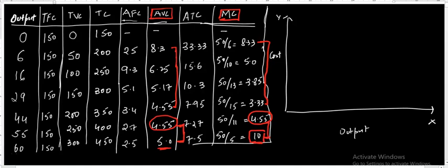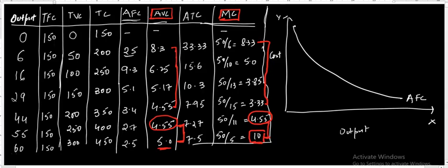If we look at the average fixed cost, it is falling throughout — from 25 it becomes 2.5. So the average fixed cost curve falls continuously. As we increase production, the average fixed cost per unit keeps falling.